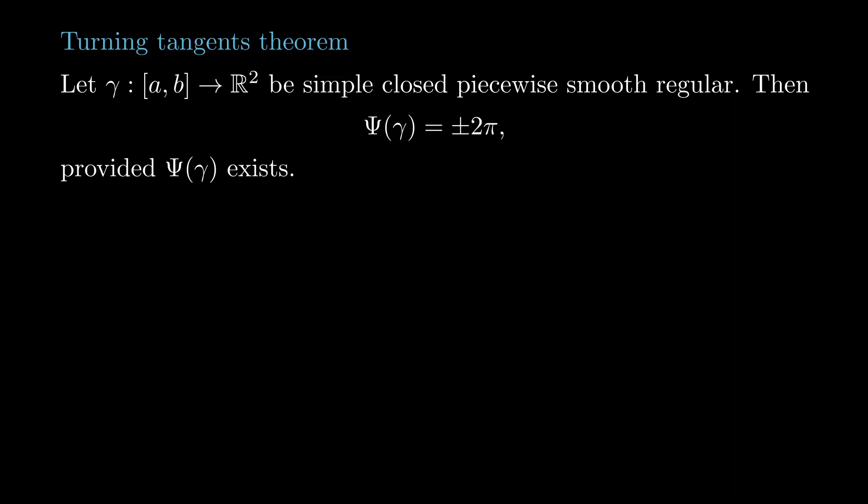In terms of winding number, it says that the tangent indicatrix winds around once and only once. This quantity will be 2π when the region surrounded by gamma lies on the left of gamma, and minus 2π when the region surrounded by gamma lies on its right.